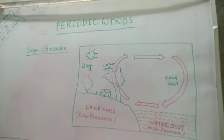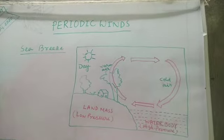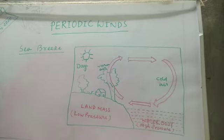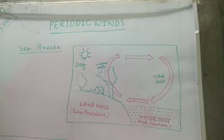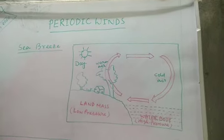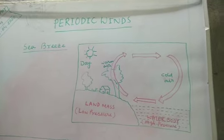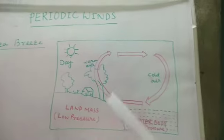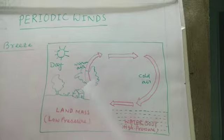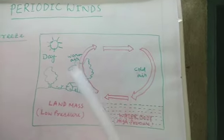Sea breeze and land breeze are also considered as periodic winds. We need to understand what sea breeze and land breeze are, how this incident occurs, and what the effects are. So first, sea breeze — you see in this particular diagram, here is the landmass and here is the water body or water mass.